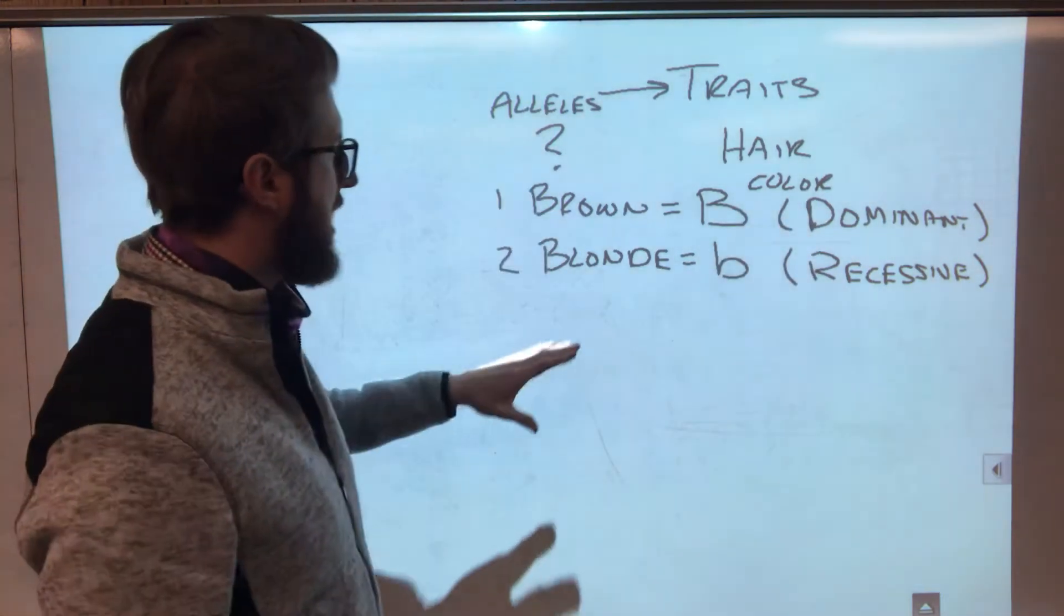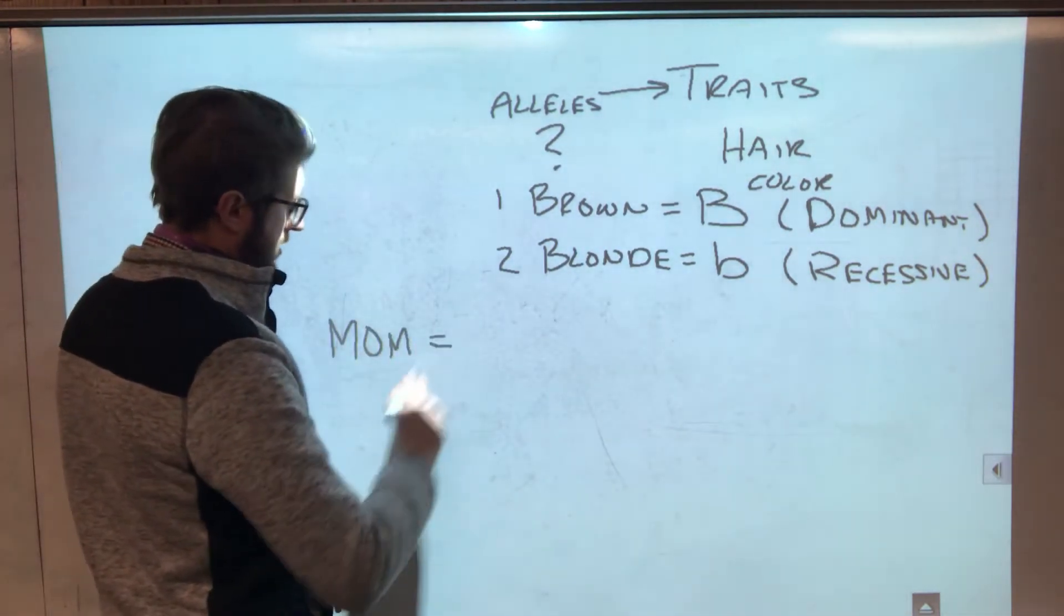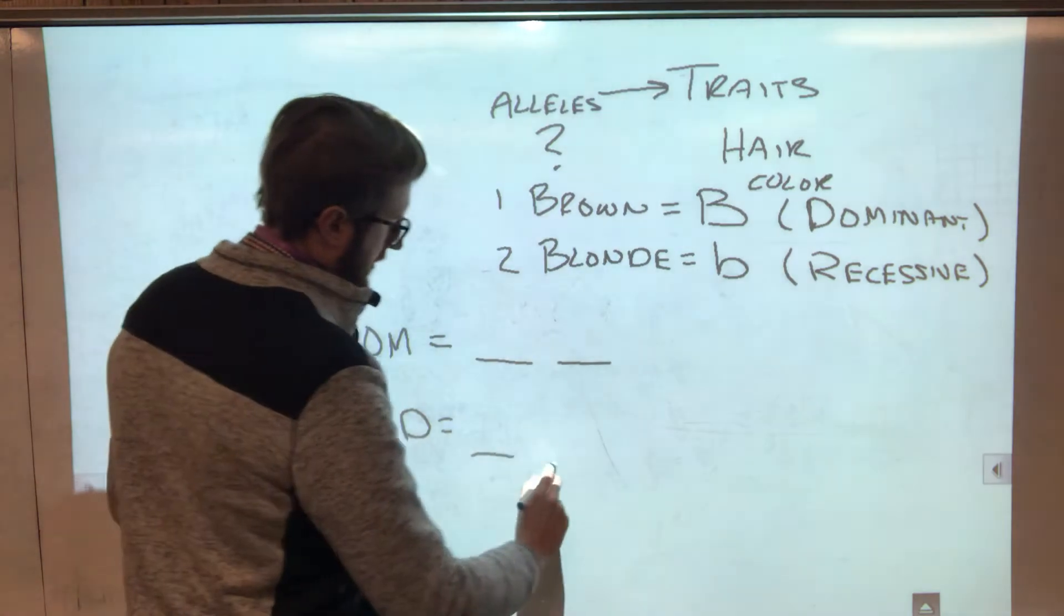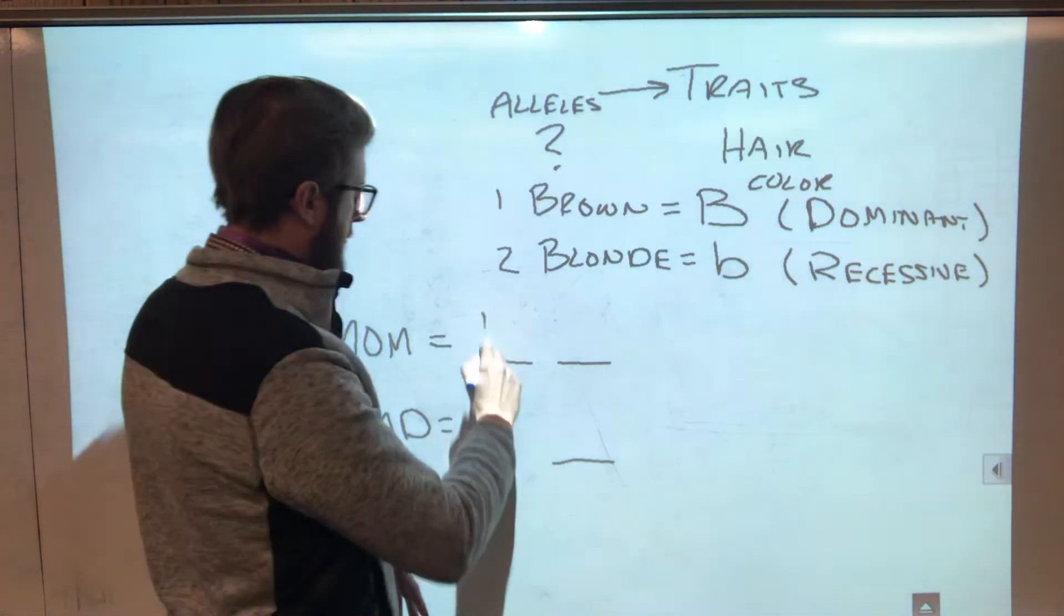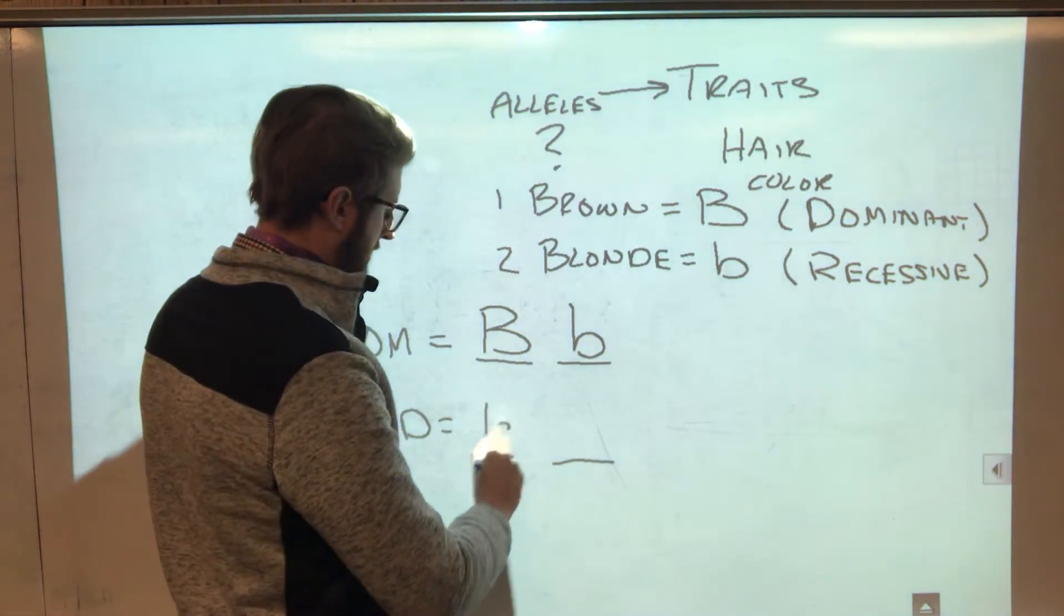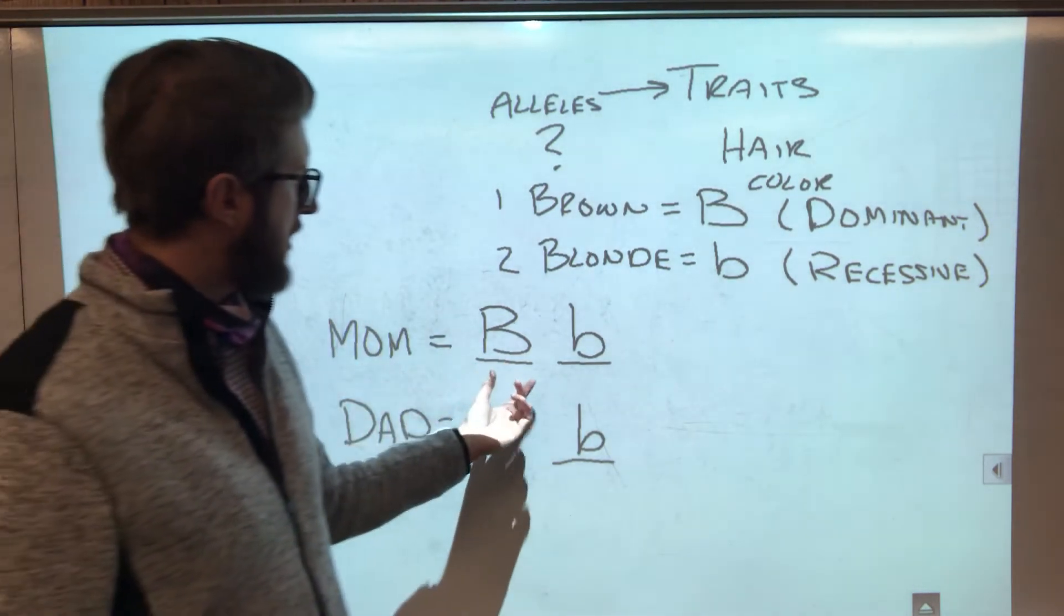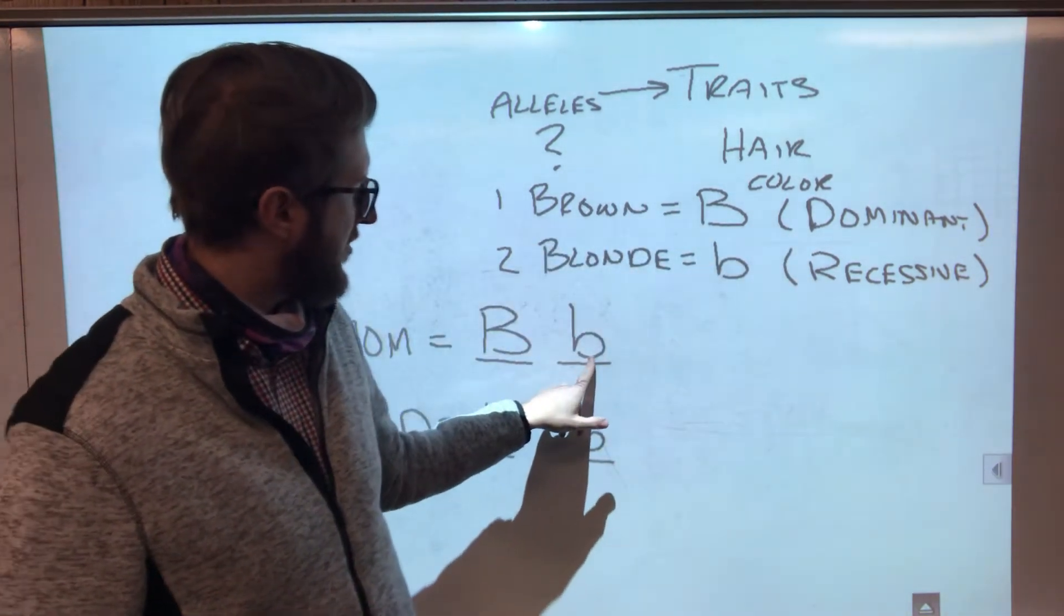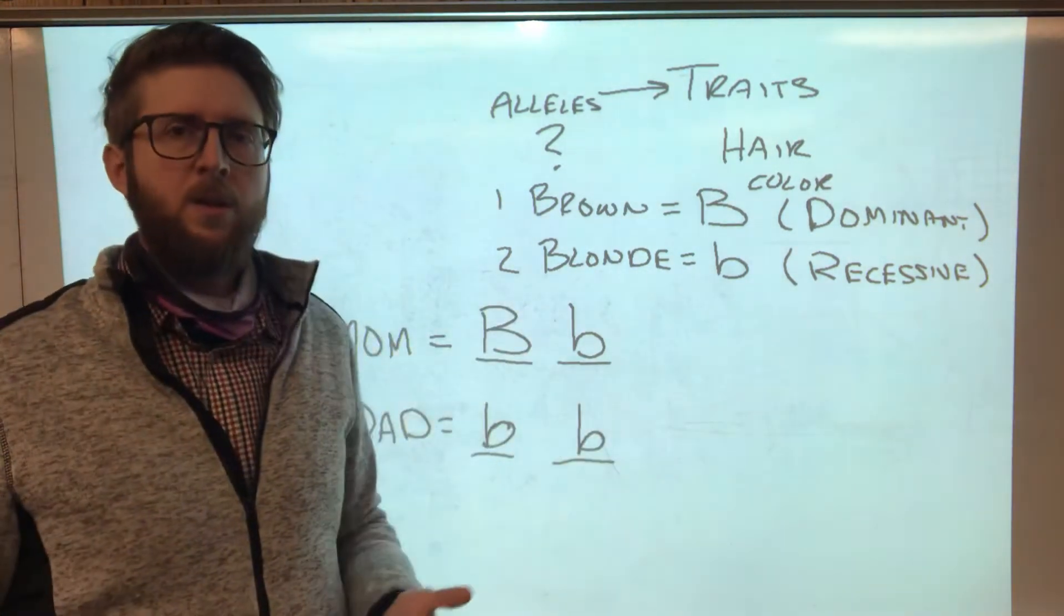Now everyone has two alleles for each trait. So mom has two alleles, dad has two alleles. Okay now even though you have two alleles only one gets expressed. So let's say that mom is big B, little b. And let's say that dad is little b, little b. Okay so even though mom has two alleles, she has the dominant brown hair allele and she has the recessive blonde hair allele. But only one of these two is going to get expressed on her body.